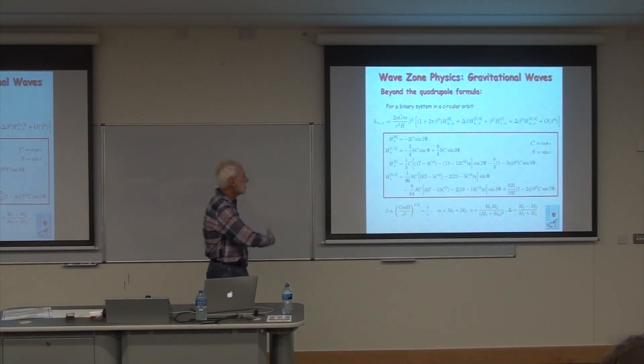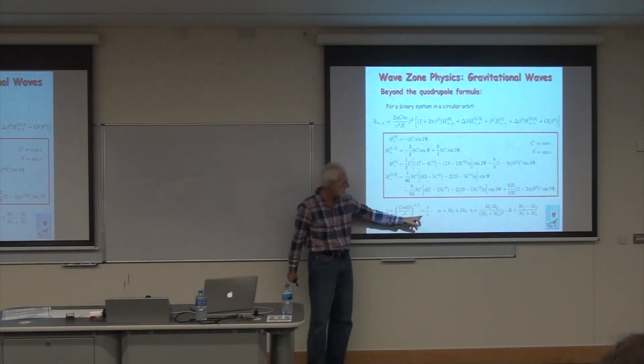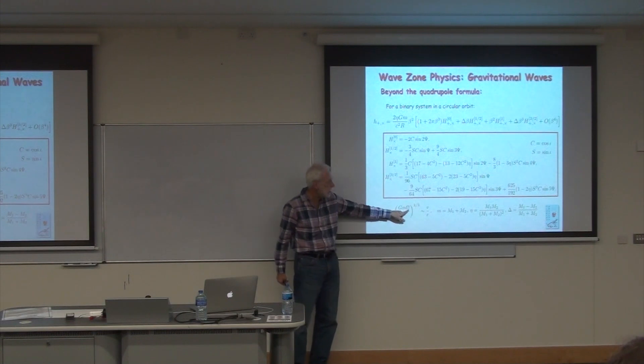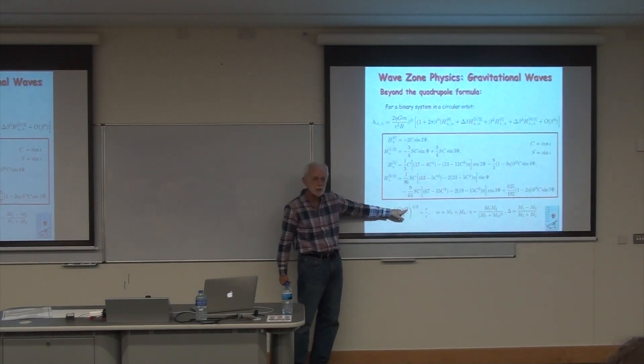Here, just to give you an illustration, are the two polarizations, the h plus and h cross. One over r, we're in the faraway wave zone. Beta is the velocity, roughly v over c. But it's first defined in terms of a more measurable quantity. We don't measure the velocity in the orbit, but we do measure the gravitational wave frequency.